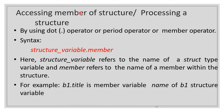Now, how to access a member of a structure — how to process a structure? For that, a special operator is used: the dot operator, also called the period operator or member operator. The syntax is: structure_variable_name dot member_name. For example, if b1 is the structure variable, we access b1.title, b1.author, b1.price, and b1.pages.